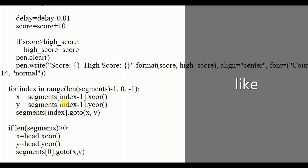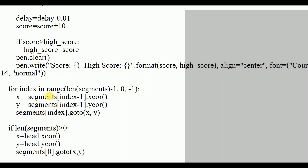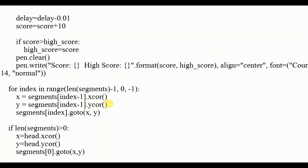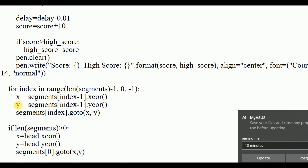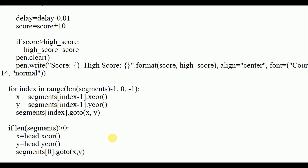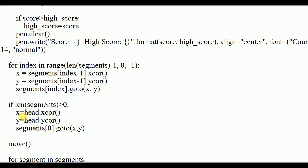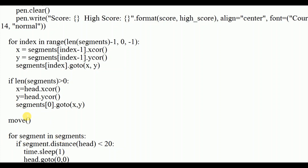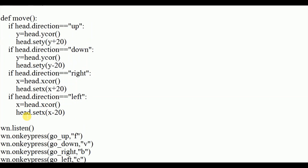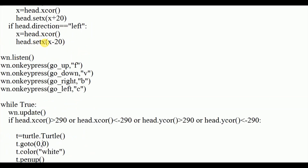This section attaches the added segments to the snake body in reverse order. The x and y coordinates of each segment at index minus i are assigned from the previous segment, so body parts follow the snake's path. If the length of segments is greater than 0, x and y take the head's coordinates, and segment[0] follows the head via go_to(x, y). Then the move function is called.